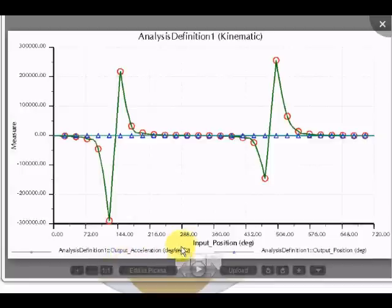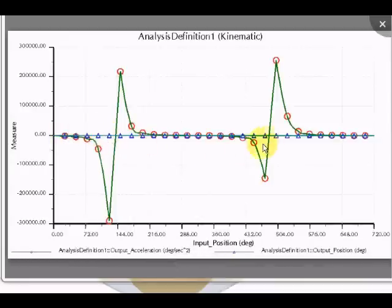And we have the output acceleration in degrees per second square, that is green. And the output position. Output position will not make much of a difference here. But the more important thing is the output acceleration.